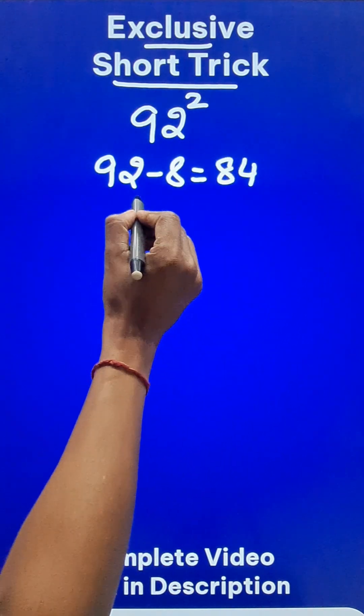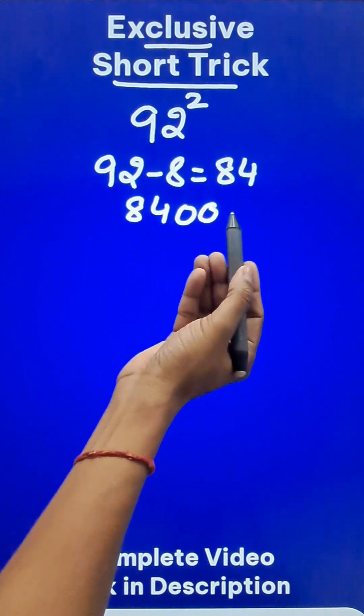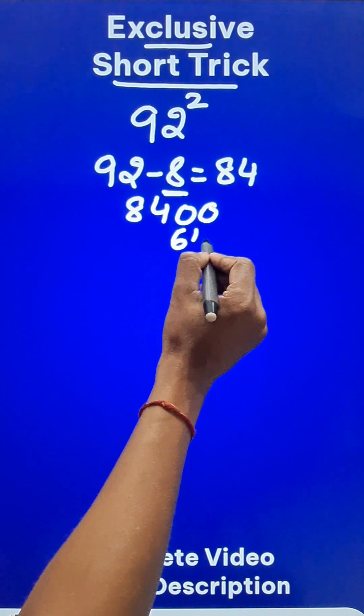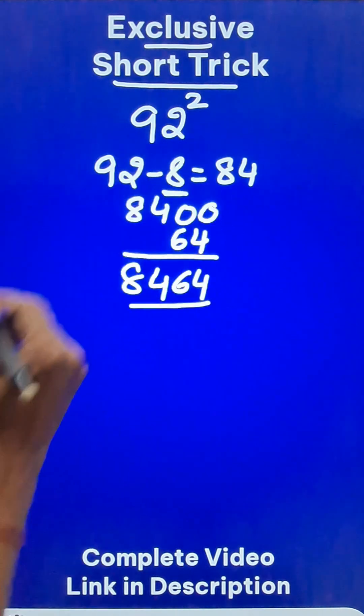Now what do you do with this 84? Just suffix two zeros because 92 is very close to 100 which contains two zeros, and then the deficit squared, 8 squared is 64. Just add them, you get 8464 as the square of 92.